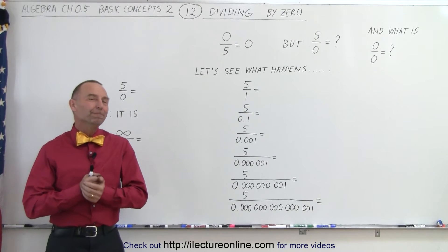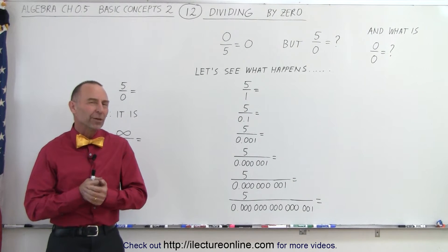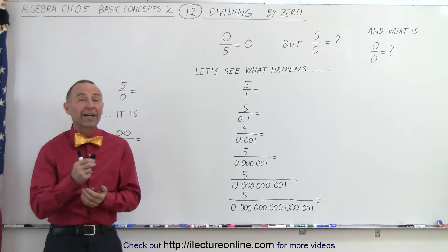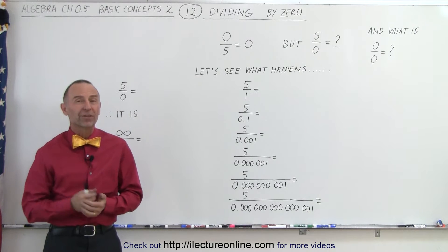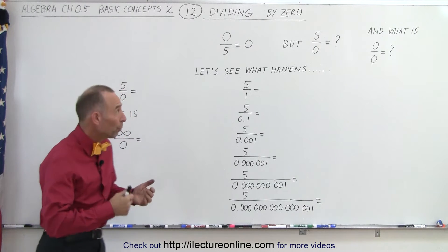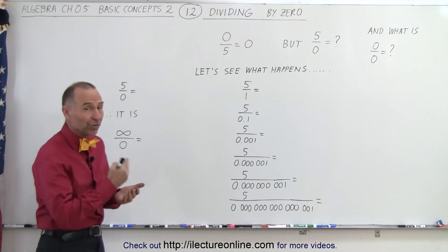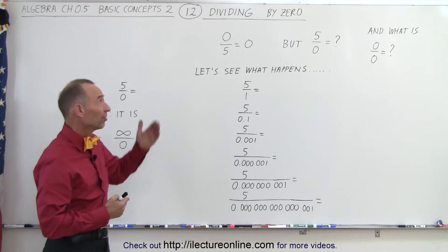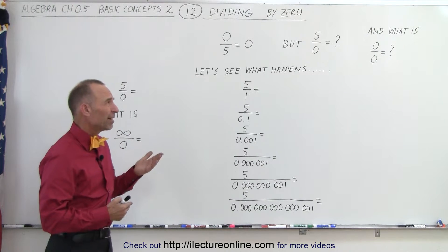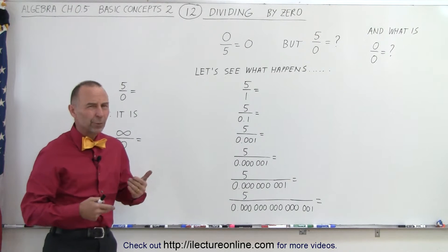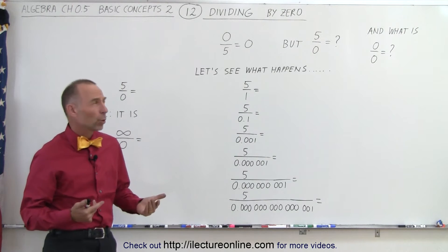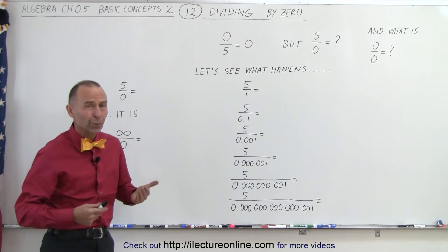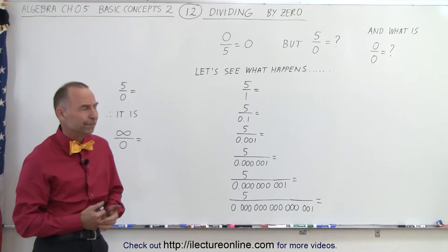Welcome to our lecture online. Let's take a look and see what happens when we divide a number by zero. We have no problem taking the number zero and dividing it by five — that is zero — but take the number five and divide by zero, what do we get? Or even take the number zero and divide by zero. What is that?